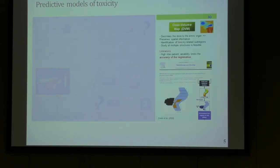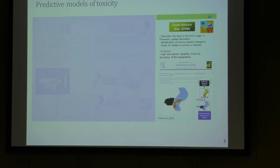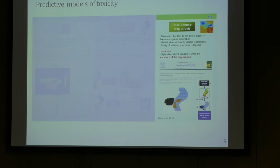The third approach, which we are using in our laboratory, is based on dose-volume maps, which actually describe the dose both on the surface and inside the organ. In this way we can identify regions where we have different dose differences between two populations, for example, and it also allows us to study multiple structures at the same time. In the past, we have used this method to study rectal toxicity and found a sub-region where the dose was related to rectal bleeding. I'm applying a similar method to study urinary toxicity.